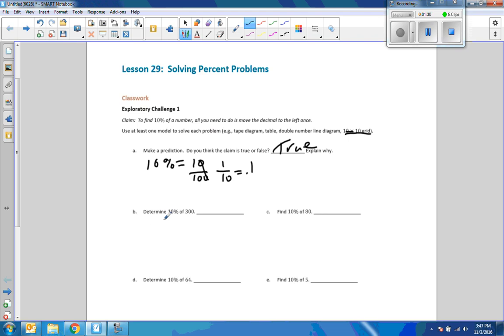So it says here, determine 10% of 300. Well, if we're going to do what the problem asks for, if we follow the directions, and it says to use at least one model, then I will do that. I'll draw a line here. This is very difficult to do with this electronic pen. Here we go. I'm doing a tape diagram. There's 4, 5, 6, 7, 8, 9, 10.